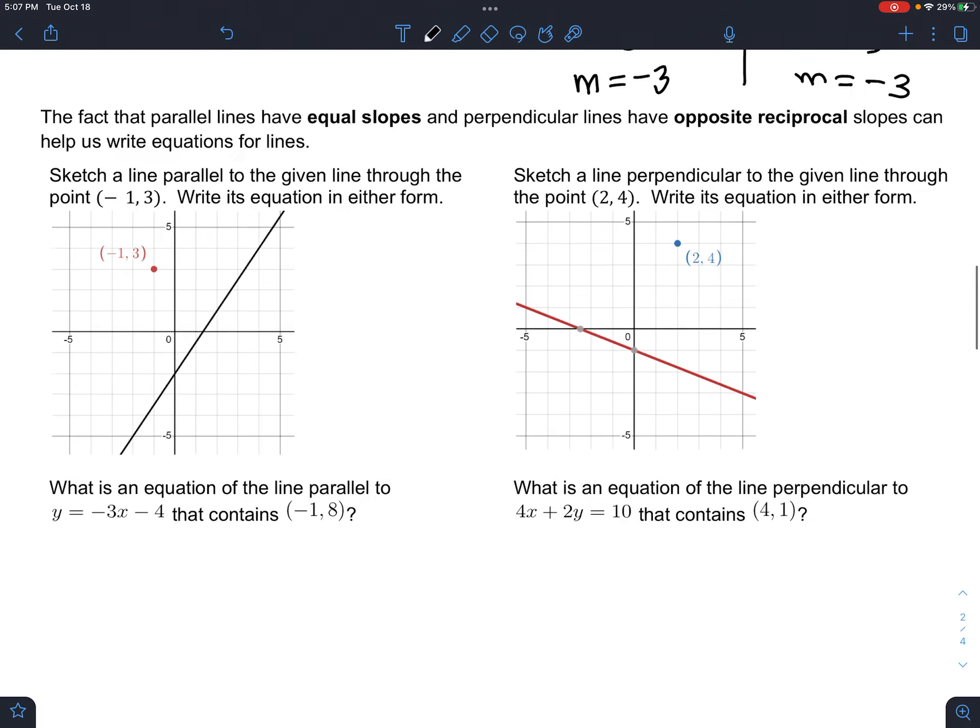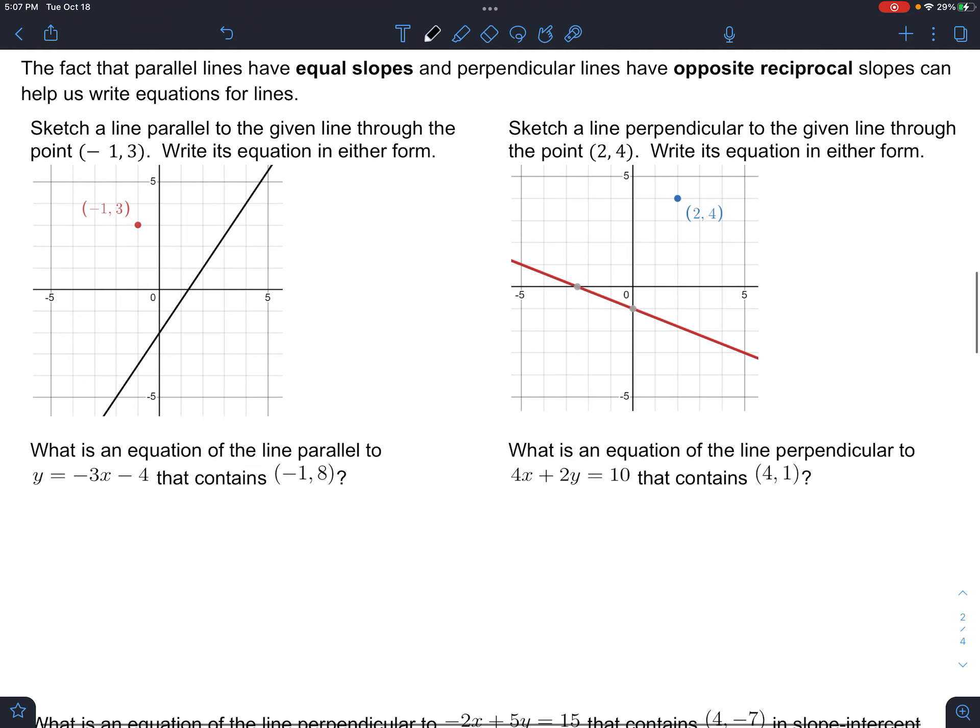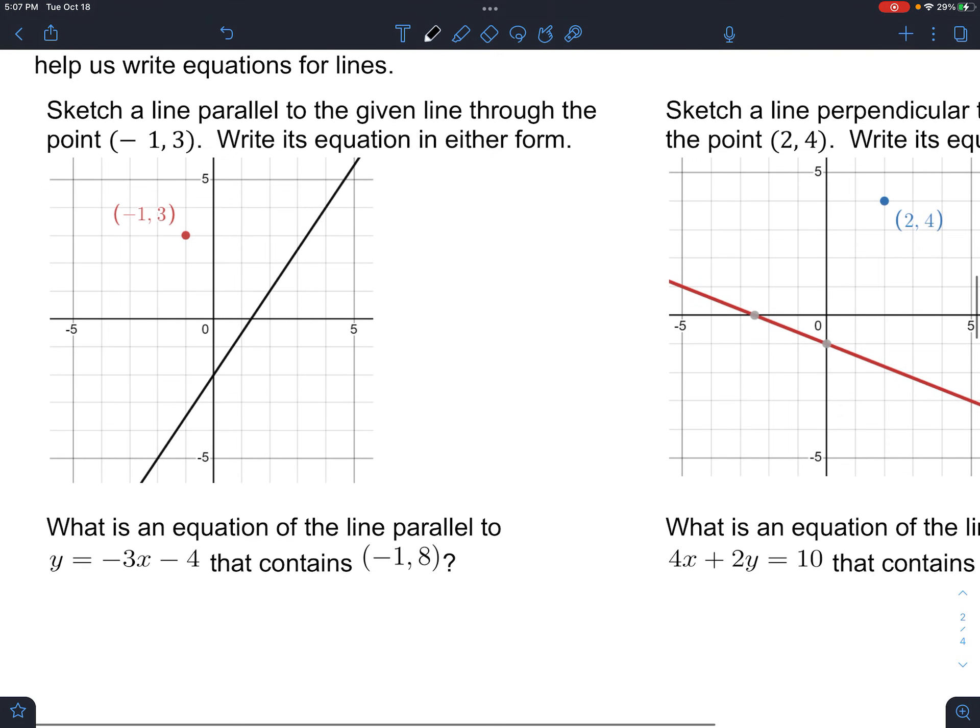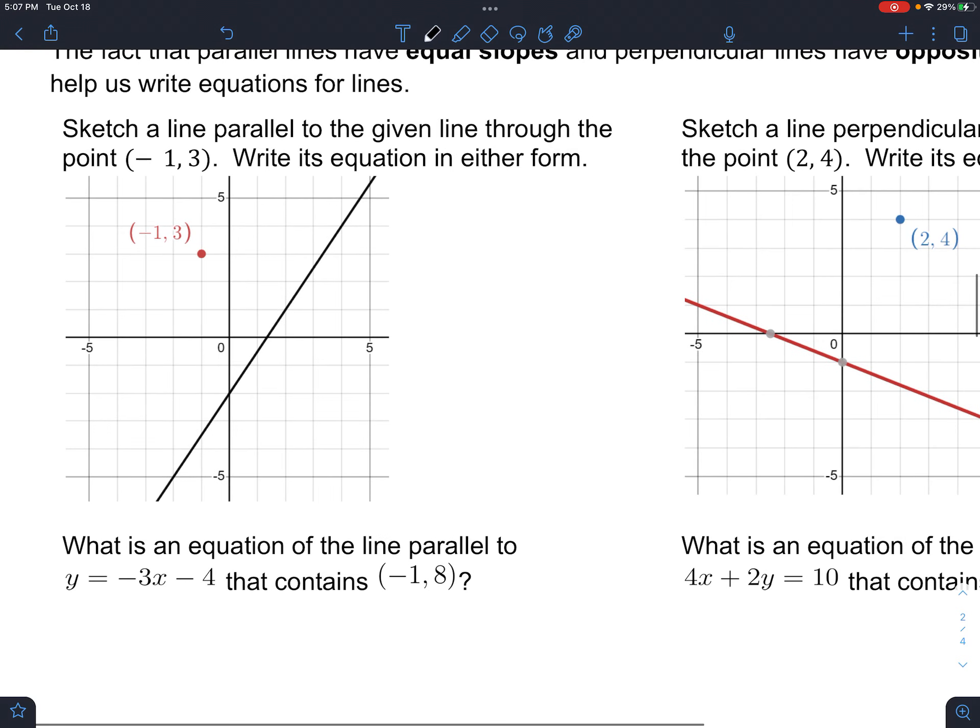We got just this bit here. Just a few questions. So, it says, the fact that parallel lines have equal slopes and perpendicular lines have opposite reciprocal slopes can help us write equations for lines. So, for this one, it wants us to sketch a line just to get the idea down. Sketch a line parallel to the given line through the point. Write its equation in either form.